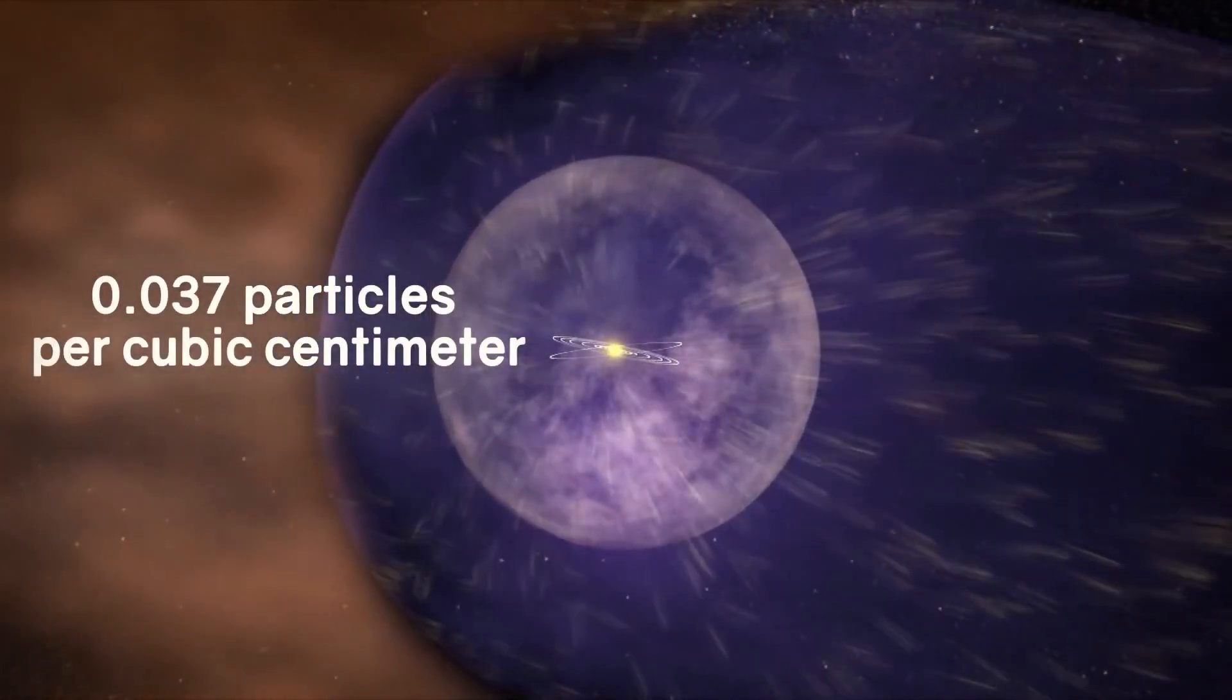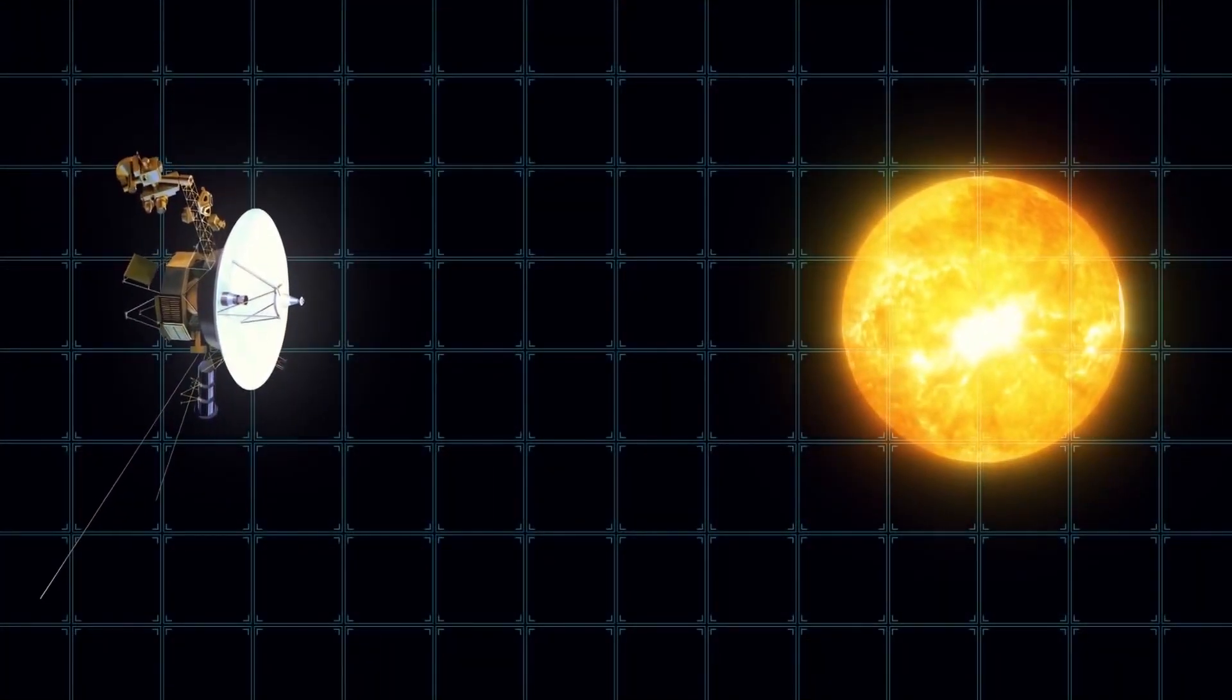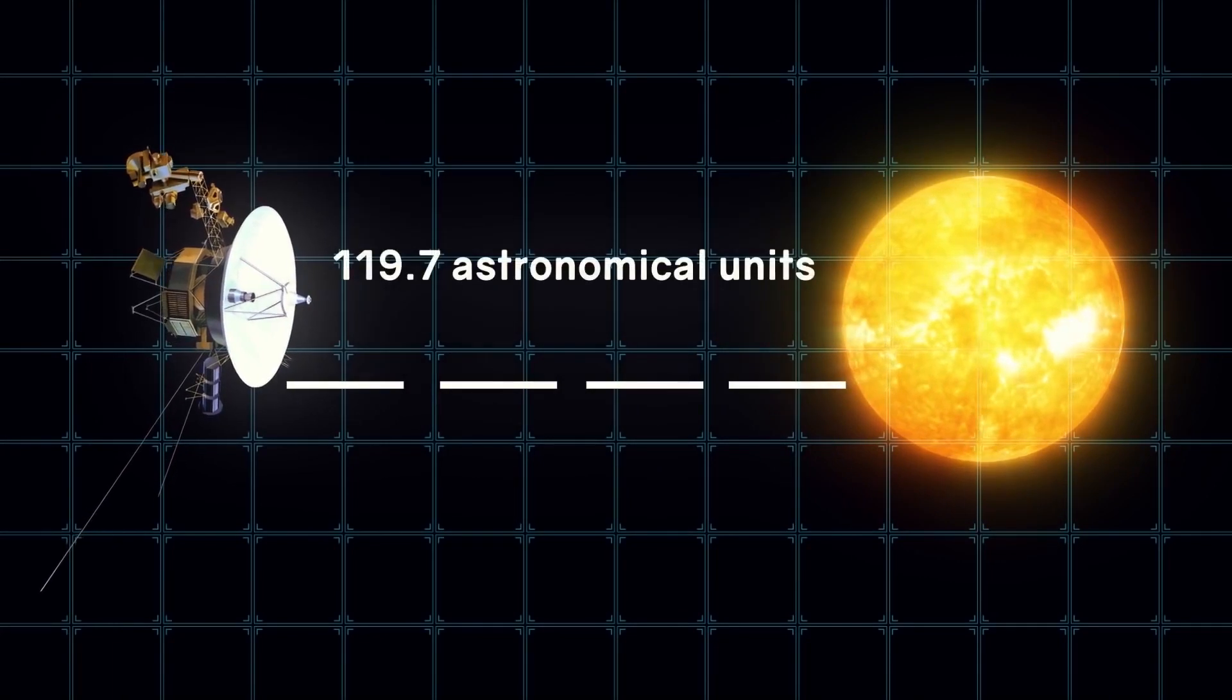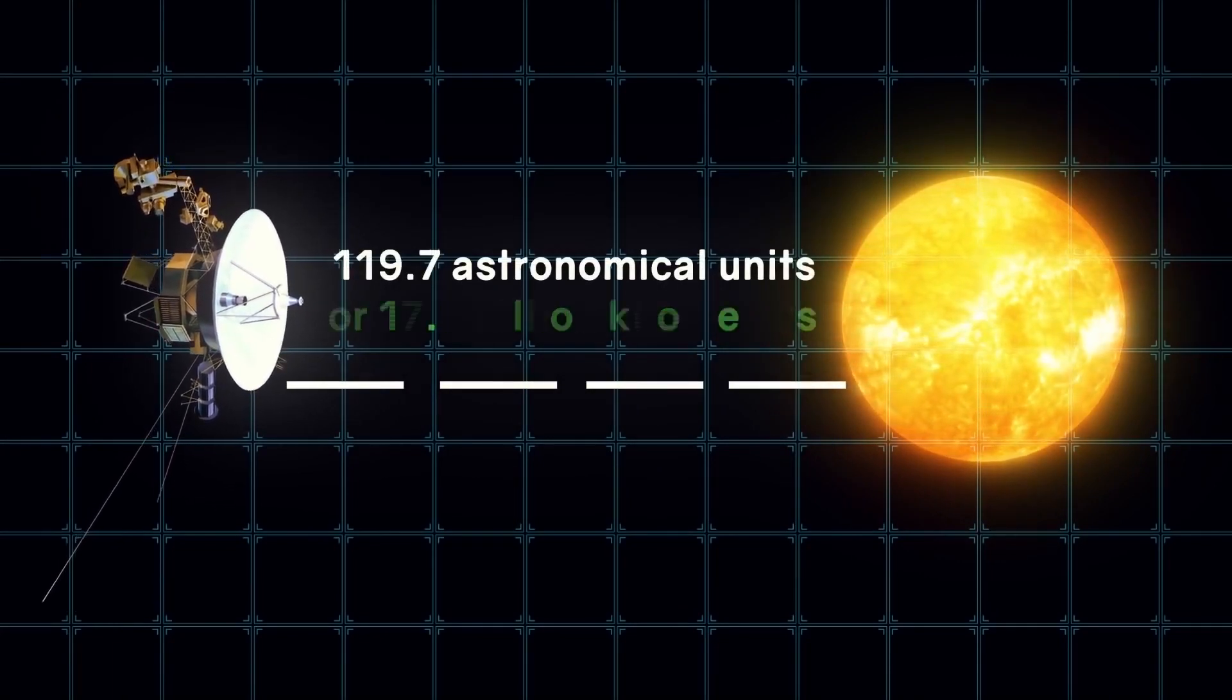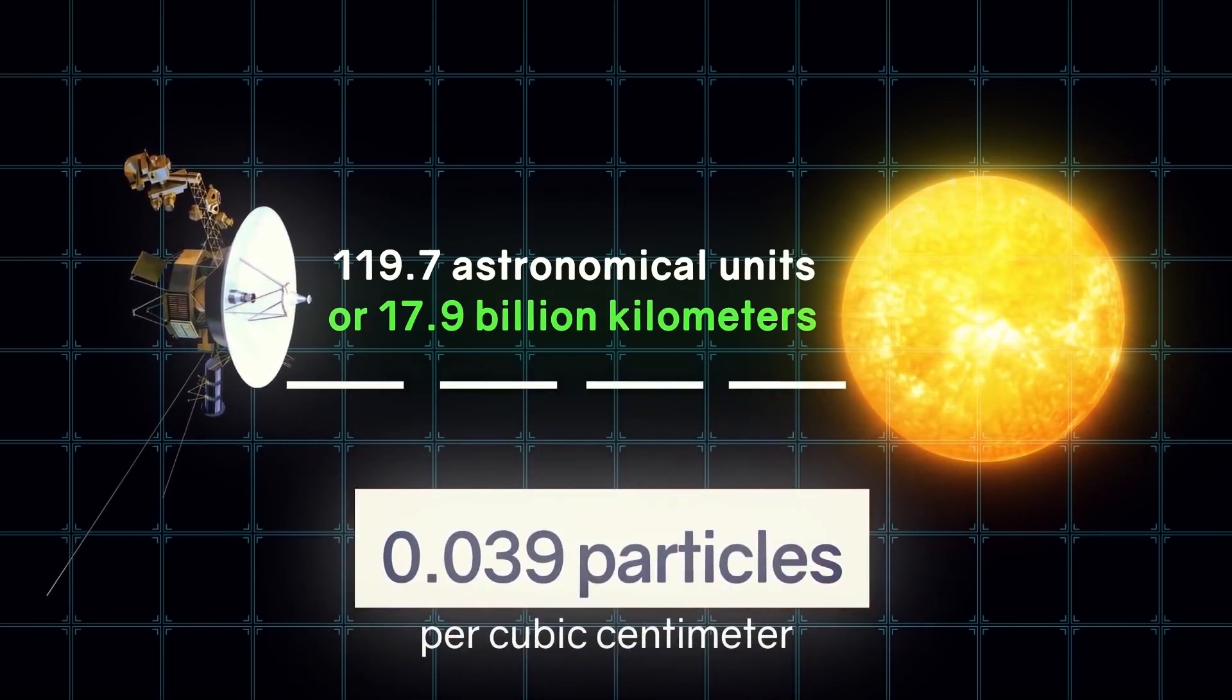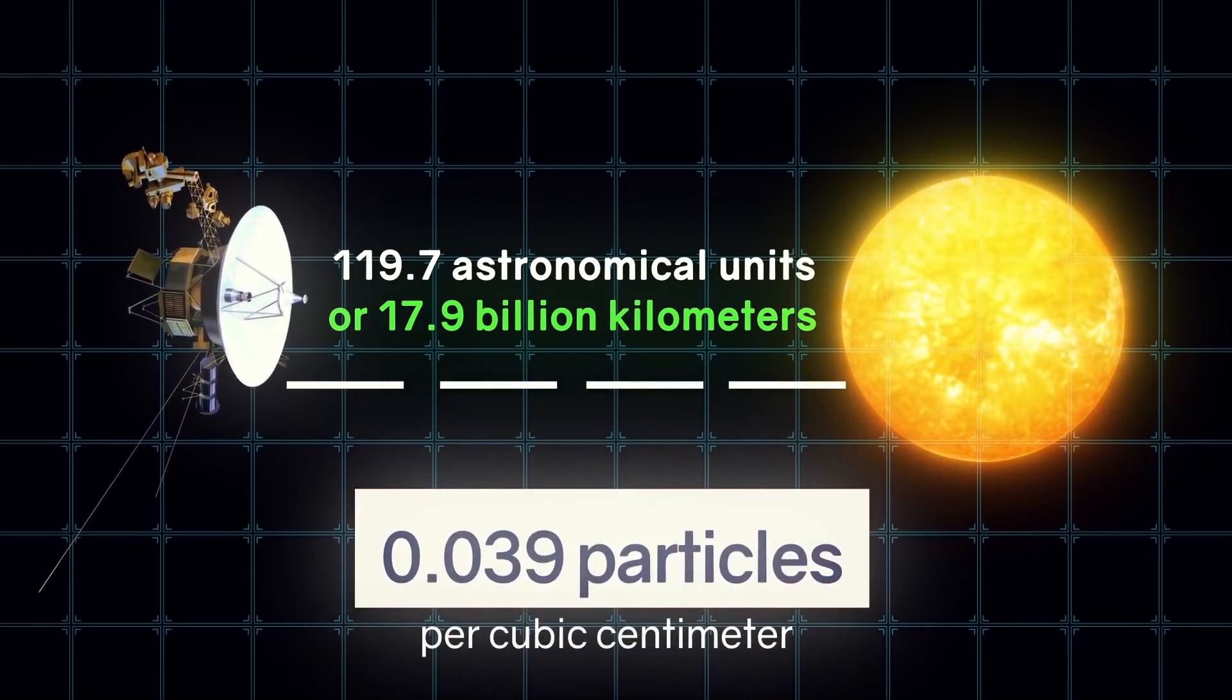The density outside the solar system, at a distance of 119.7 astronomical units or 17.9 billion kilometers from the Sun, was 0.039 particles per cubic centimeter according to the Voyager 2 instruments. This was practically identical to the calculations.